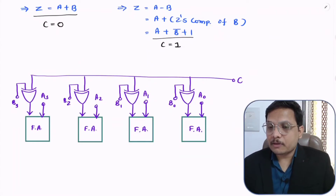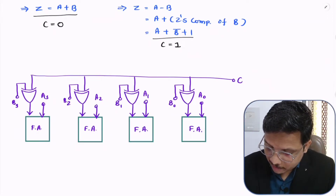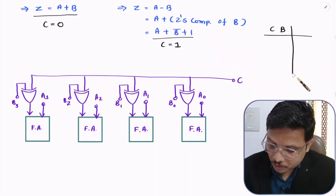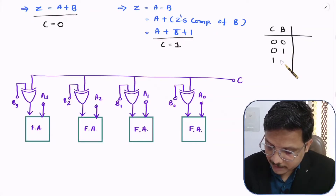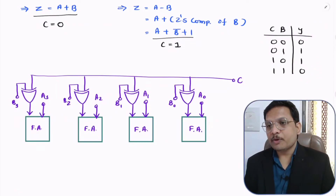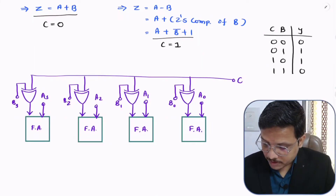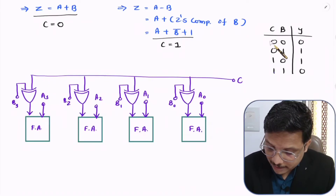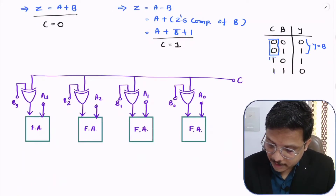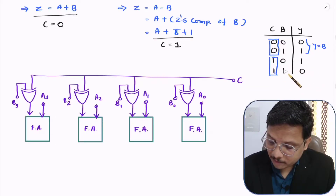Let me explain the basic property of the XOR gate. The truth table for XOR gate with inputs C and B gives outputs: 0,0→0; 0,1→1; 1,0→1; 1,1→0. If you carefully observe: when C equals 0, the output Y is similar to B — so output Y equals B. And when C equals 1, output Y is the invert of input B — that is, output Y equals B-bar.